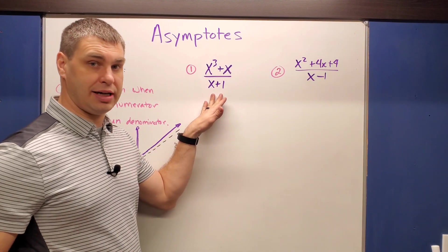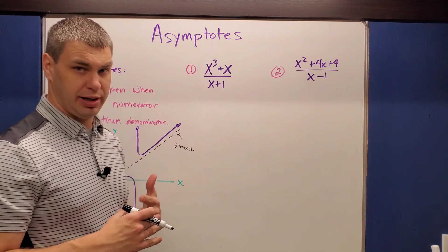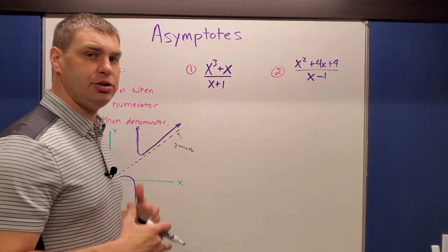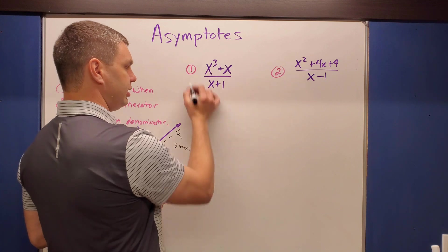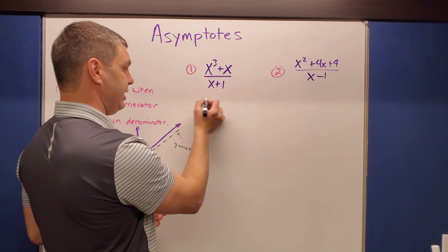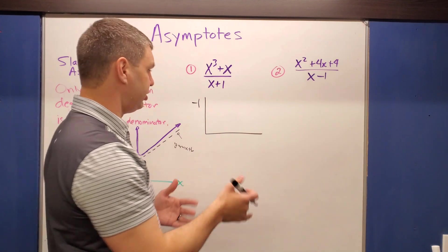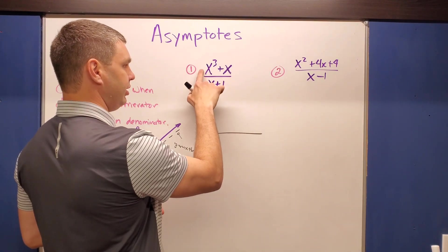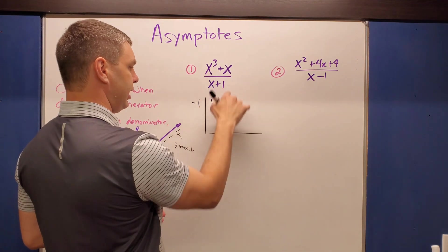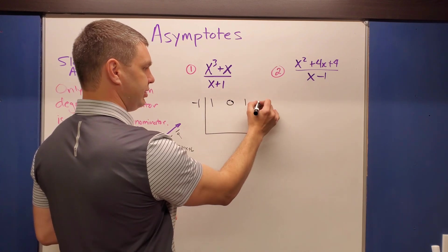Here's how to check: the example is x³ plus x over x plus one. We use synthetic division — I'll link a video if you need a refresher. Setting the denominator equal to zero gives x equals negative one, so we divide by negative one. For x³ plus x, the coefficients are: one (x³ term), zero (missing x² term), one (x term), and zero (missing constant).